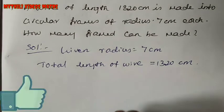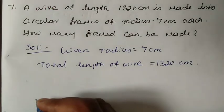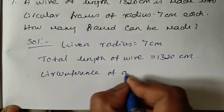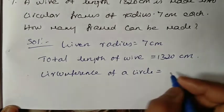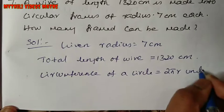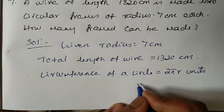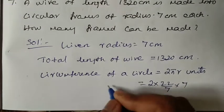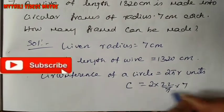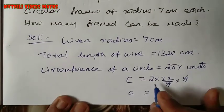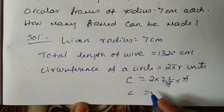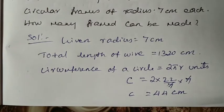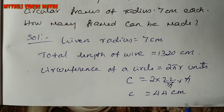To find one circular frame, we use the circumference formula. Circumference of a circle is equal to 2πr units. Substitute: 2 into 22 divided by 7, into radius 7. The 7 cancels. So 2 into 22 equals 44 cm. That means one circular frame requires 44 cm of wire.